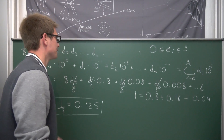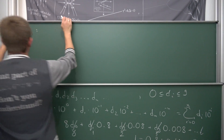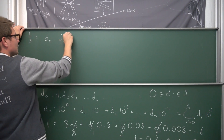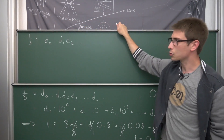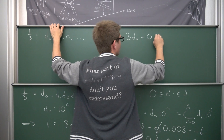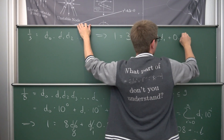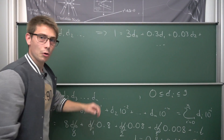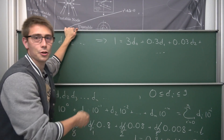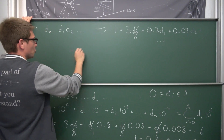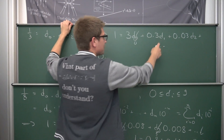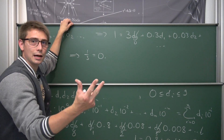Now let's take a look at an easy example — what about one-third? Once again, we say that one-third is of the form d0-dot-d1-d2 and so on. We multiply both sides by three, giving us: one equals 3·d0 plus 0.3·d1 plus 0.03·d2 plus dot-dot-dot. Does three fit into one when multiplied by some digit? No — so our leading digit d0 must be zero. Now: how often does 0.3 fit into one? Three times, giving us 0.9.